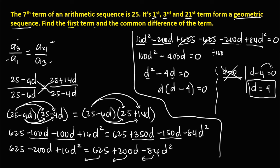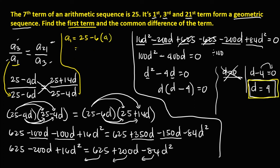To solve for the first term: a1 equals 25 minus 6 times d equals 25 minus 6 times 4 equals 25 minus 24, which equals 1. Therefore, the common difference d equals positive 4 and the first term a1 equals 1.